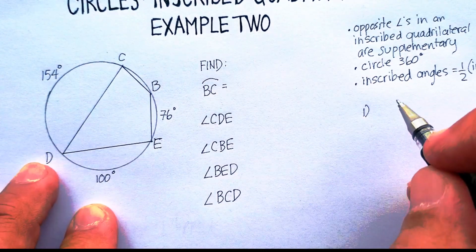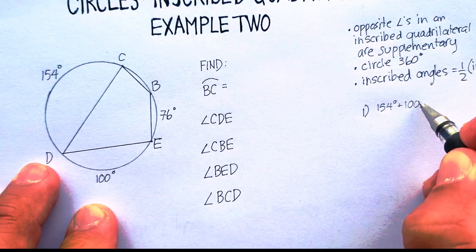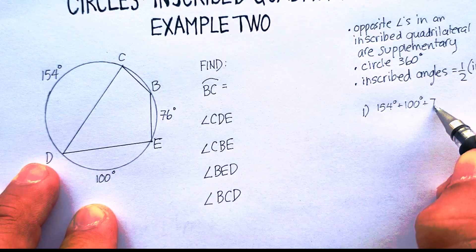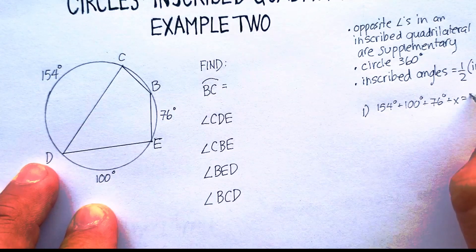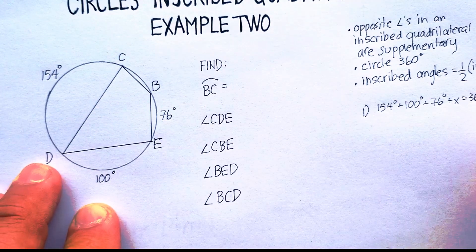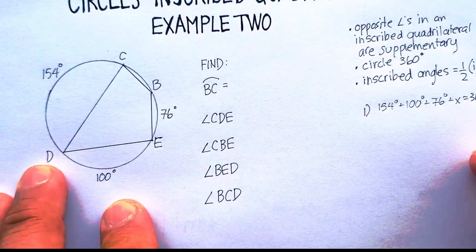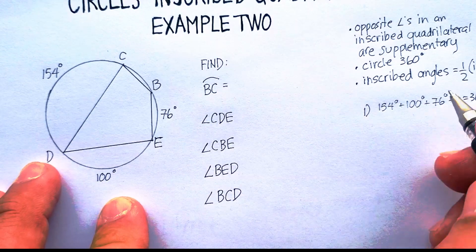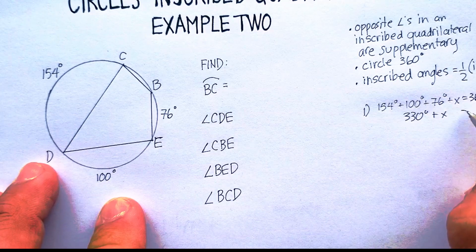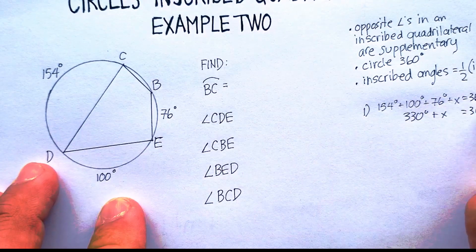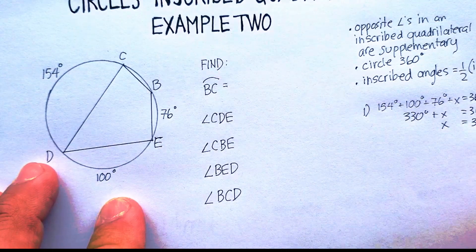I know that 154 degrees plus 100 degrees plus 76 degrees plus the part that I don't know should be equal to 360 degrees. And that is going to be equal to 330 degrees plus X equals 360, subtract 330, X is going to be equal to 30 degrees.